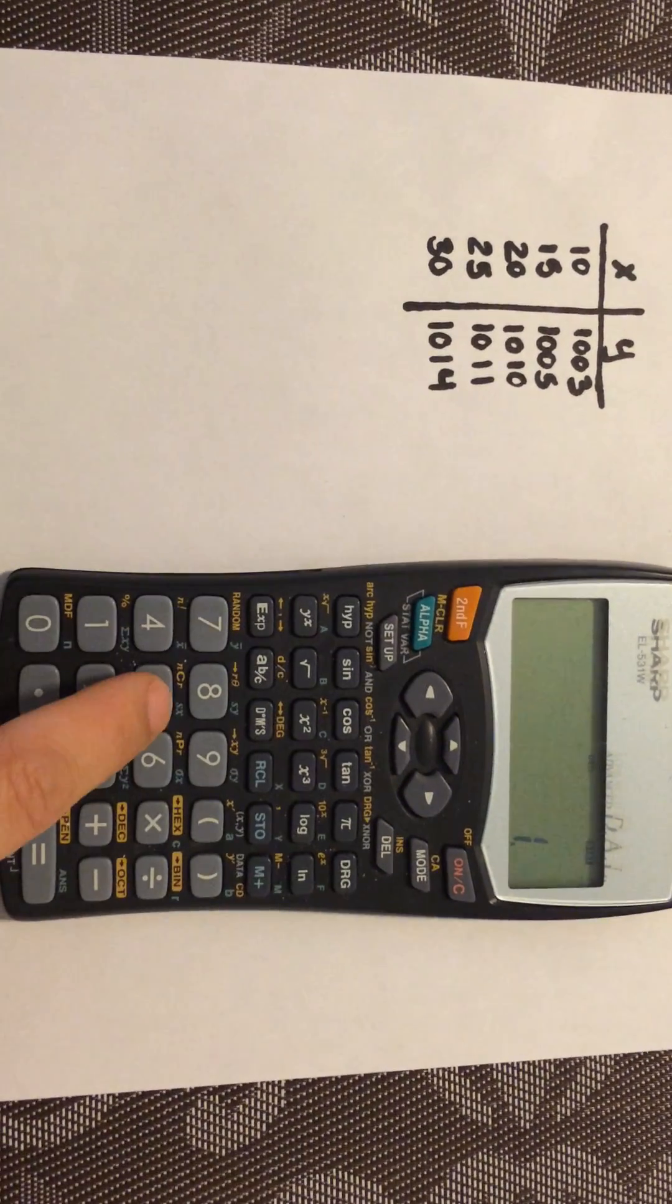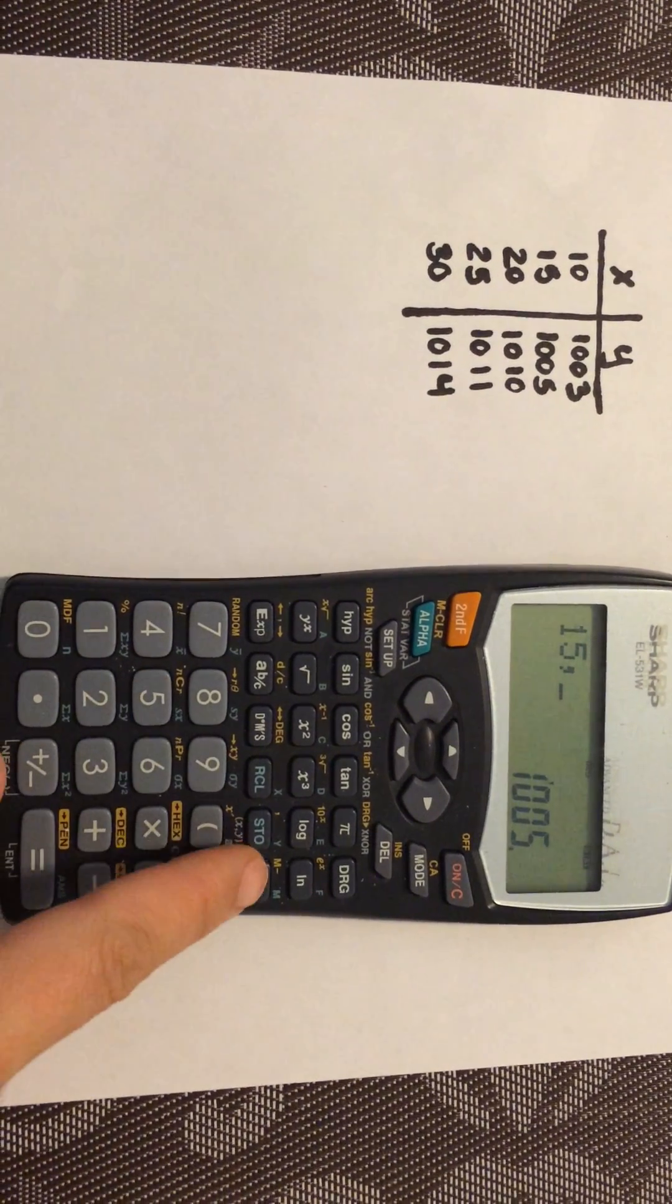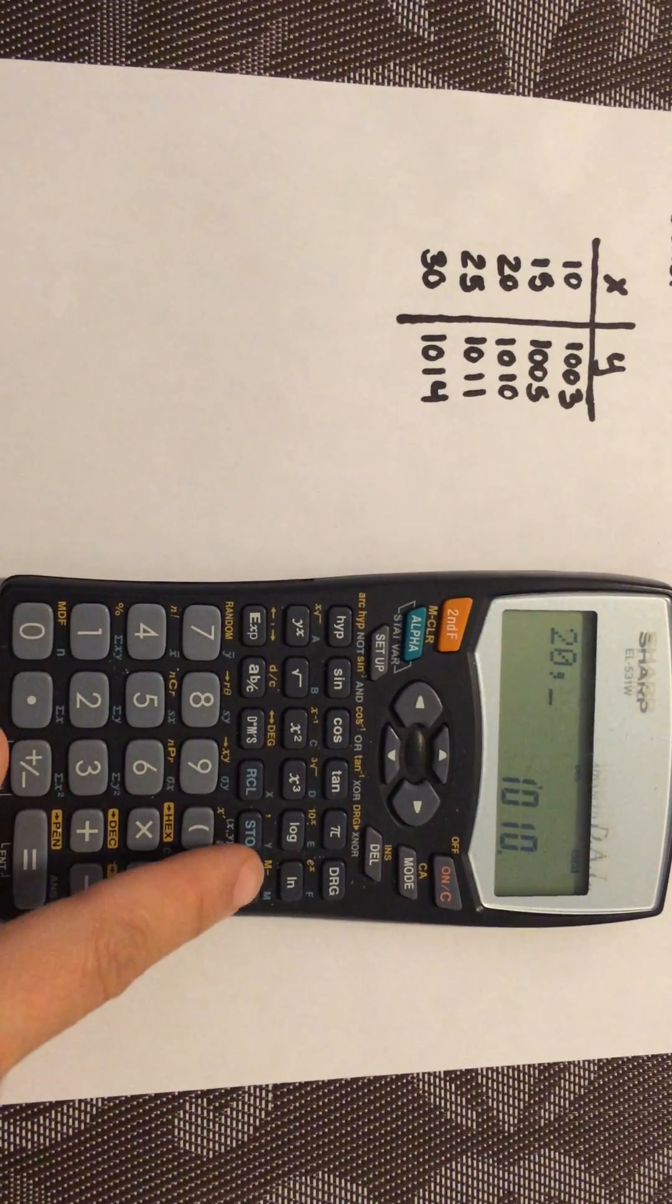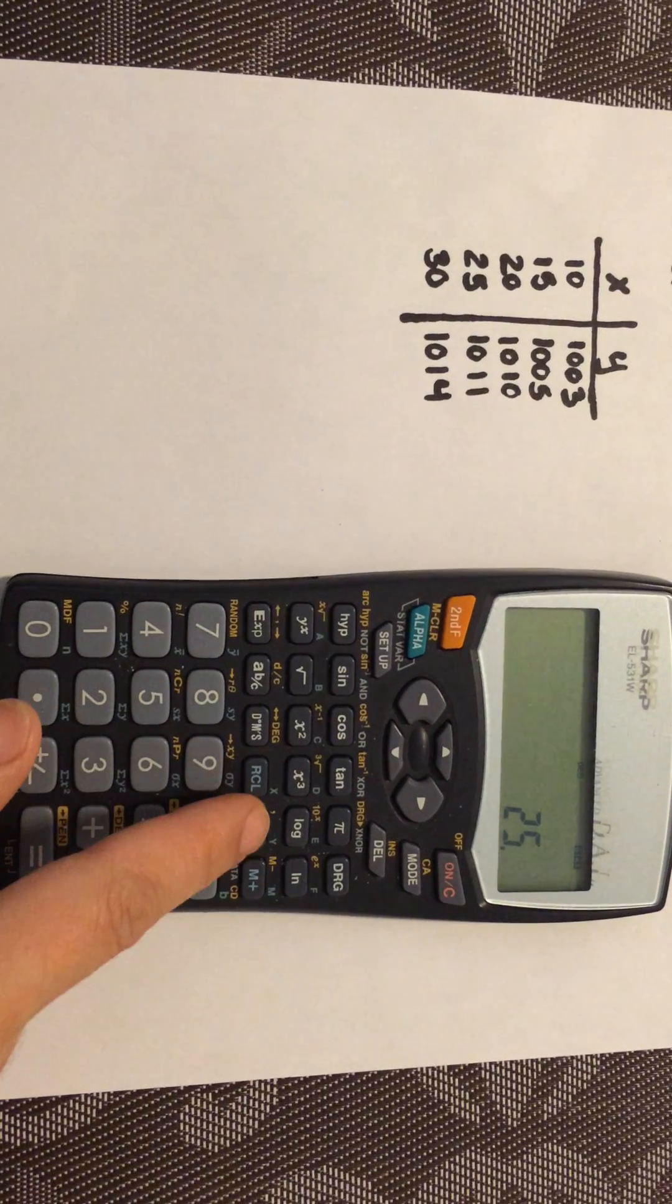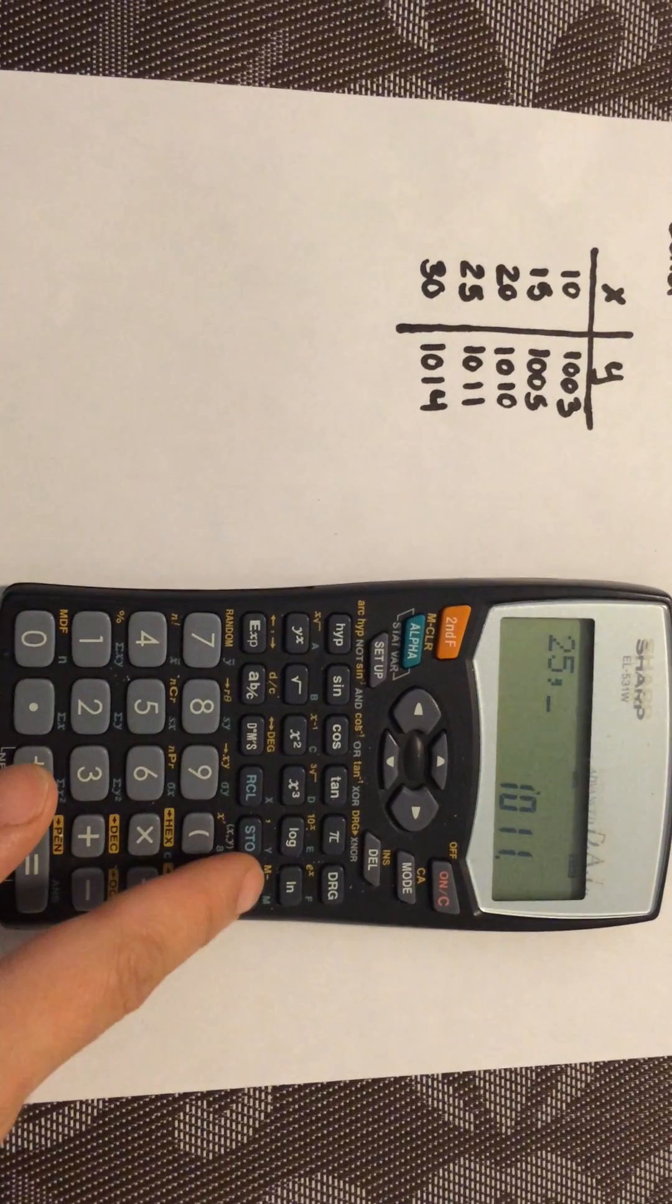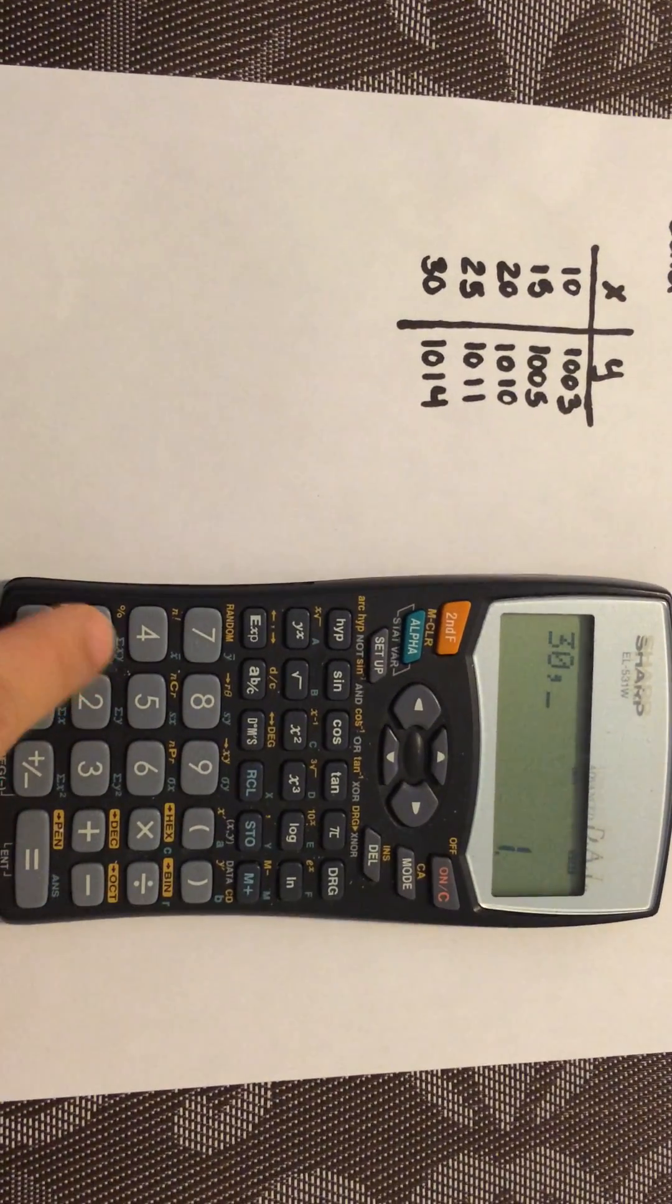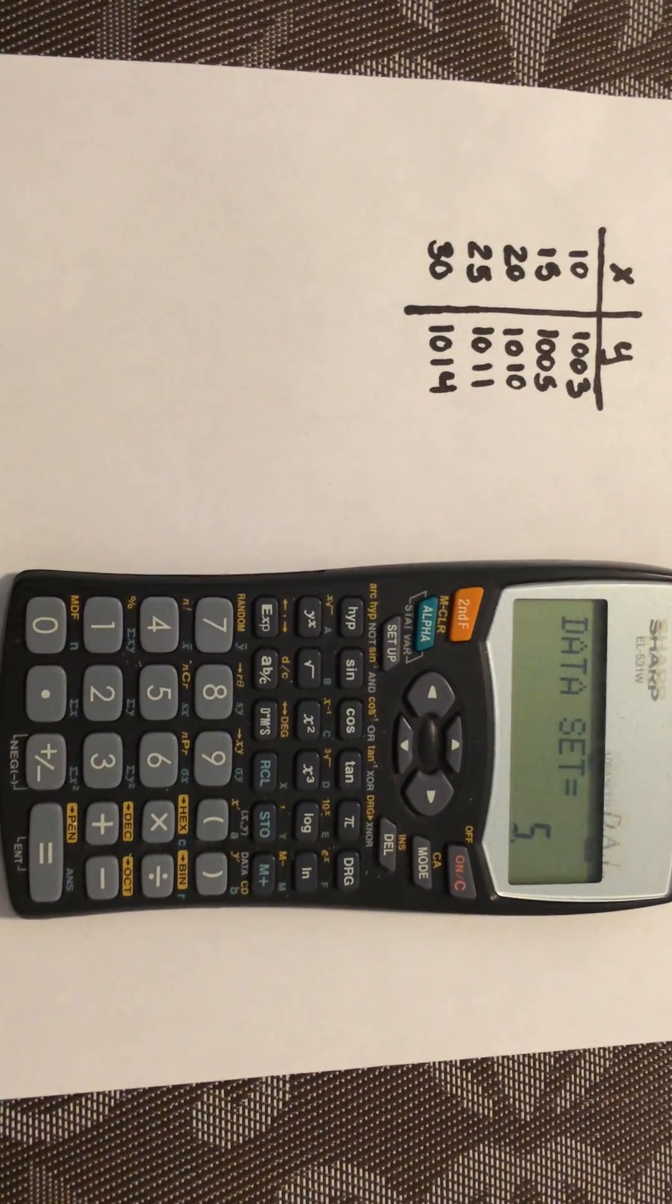Repeat the process: 15, STO, 1005, M plus—that's 2 data points. Then 20, STO, 1010, M plus for 3 points. Next, 25, STO, 1011, M plus for 4 points. Finally, 30, STO, 1014, M plus. We've entered all 5 data points.